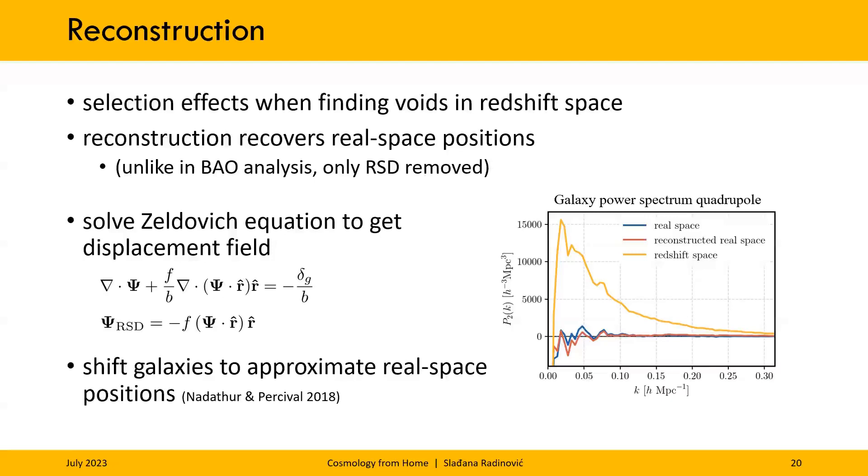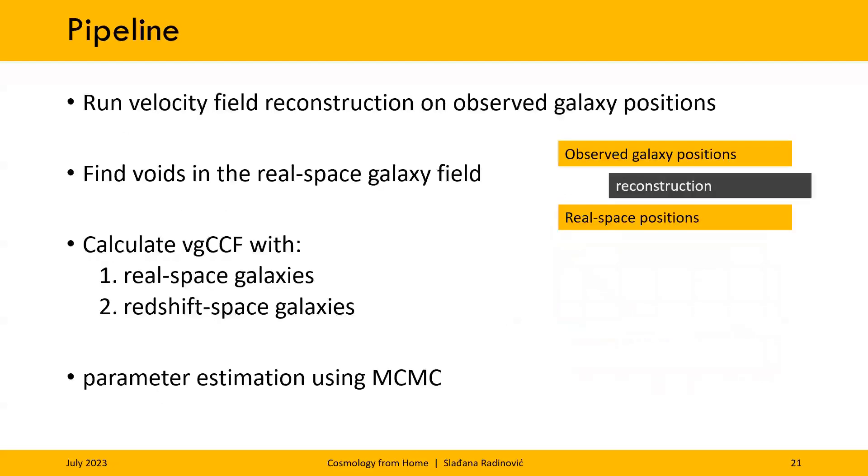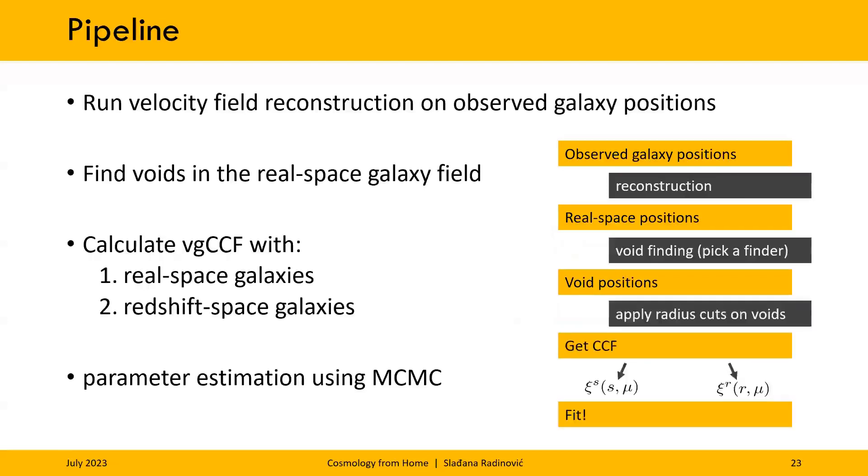So, to recap our pipeline. We take an observed redshift space catalog and run reconstruction to get approximate real space positions. We then run void finding on this real space catalog and correlate these voids both with real space and redshift space galaxies to obtain the real space and redshift space cross correlation function, respectively. And then we can run our MCMC chains.